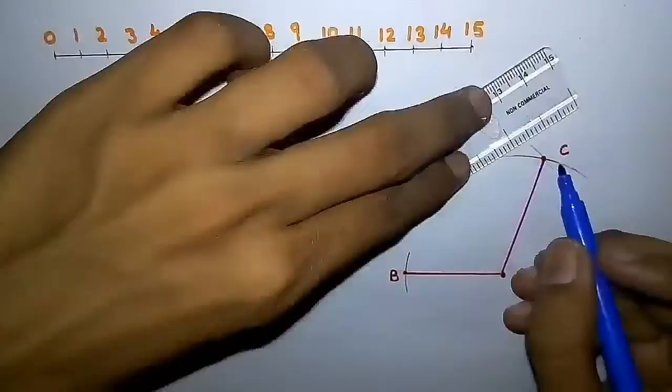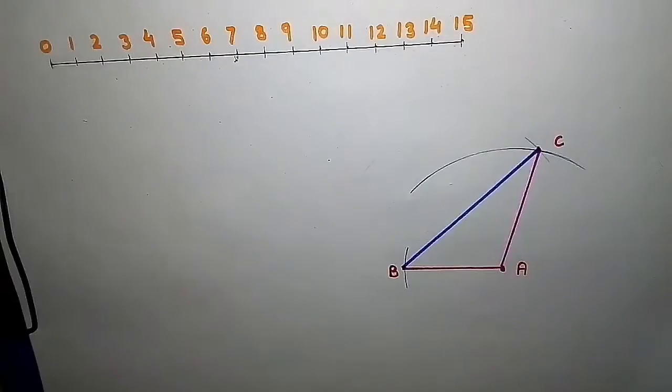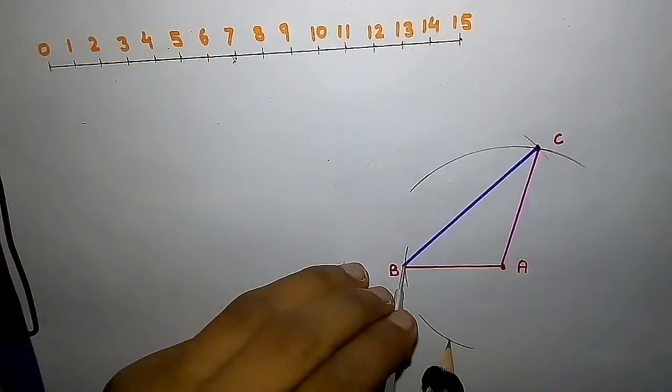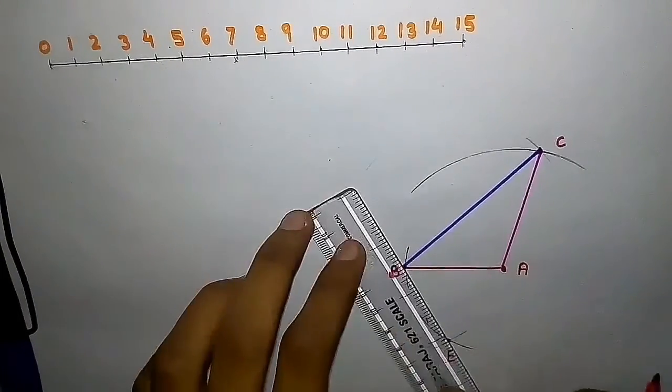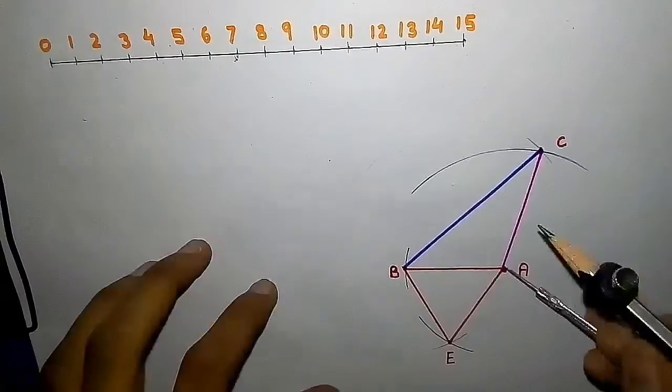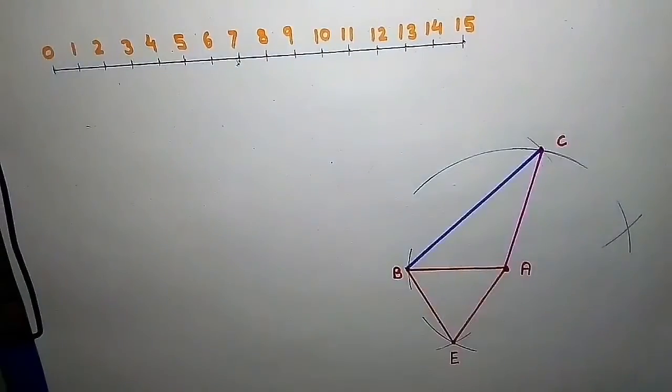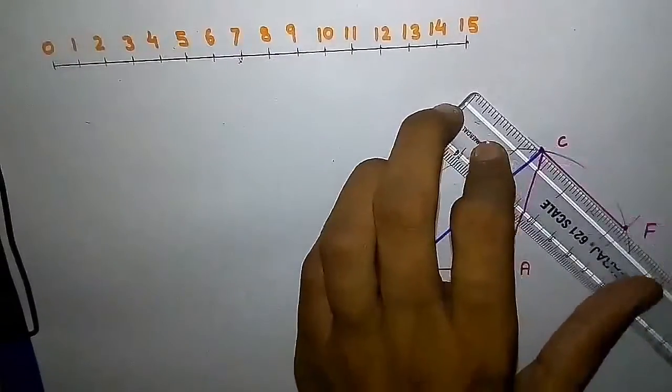Now draw equilateral triangles on each side of the formed triangle. To draw equilateral triangles, cut two arcs of radius equal to the side length from each vertex and join the vertices with the point of intersection of the arcs. Do this for each side.